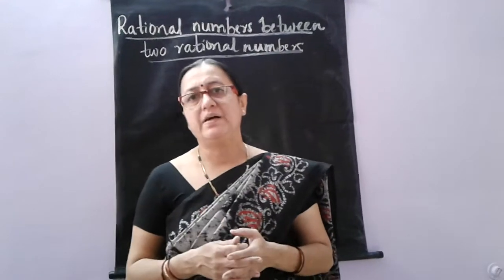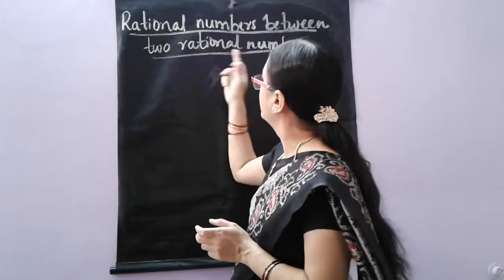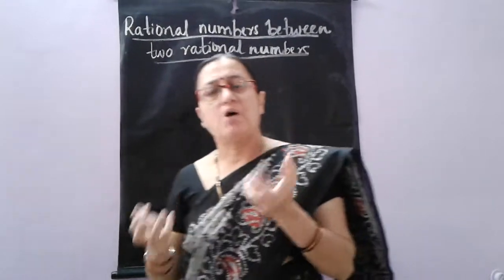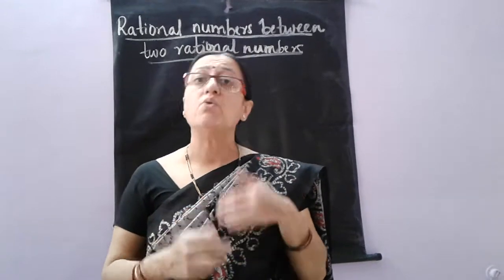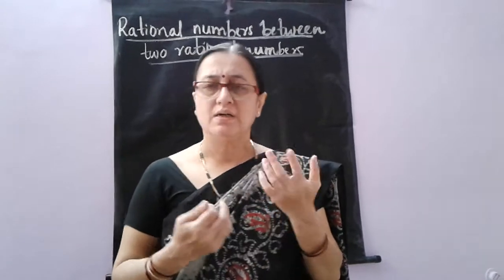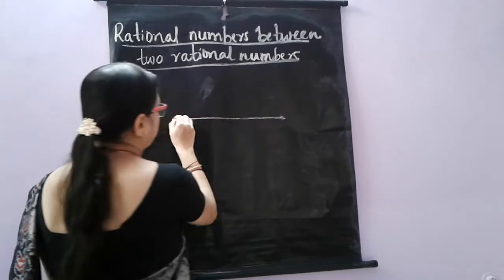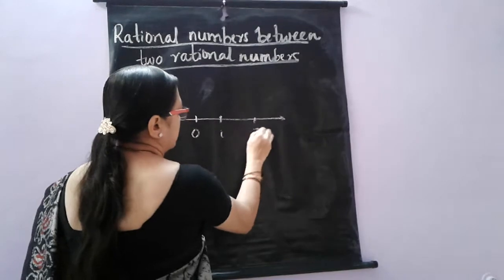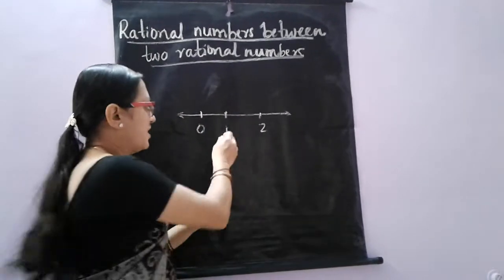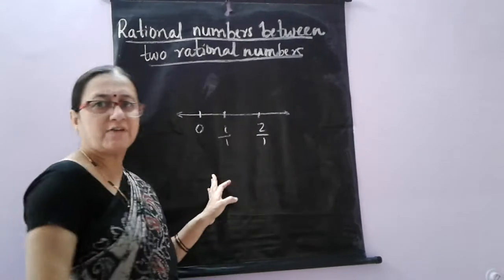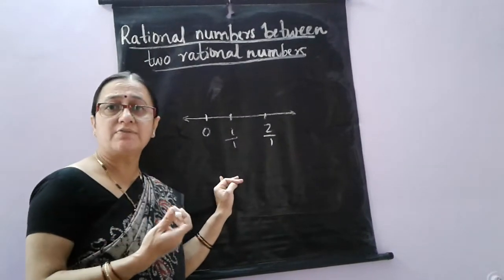Hello children. In this part we are finding rational numbers between two rational numbers. How many rational numbers can we find between two rational numbers and how can we find them? When we represent the number line here, this is for rational numbers also. Between 1 and 2, how many rational numbers can we get?